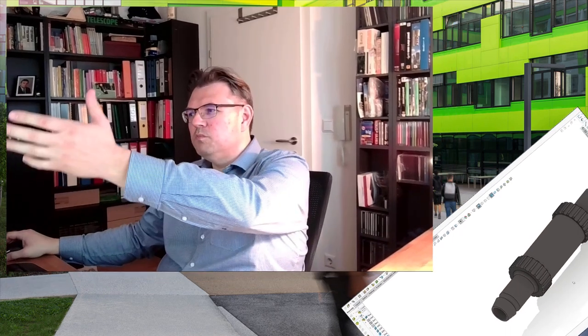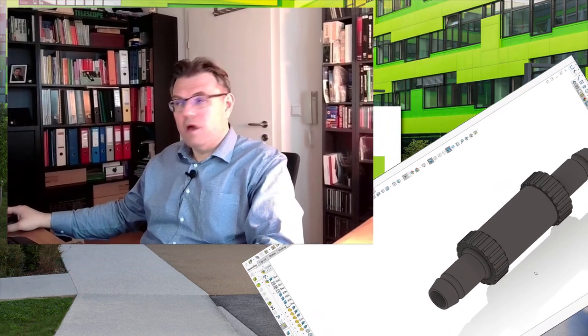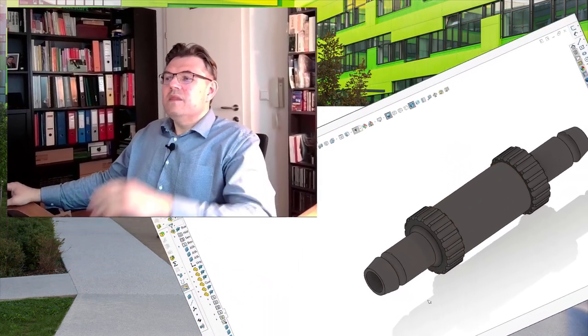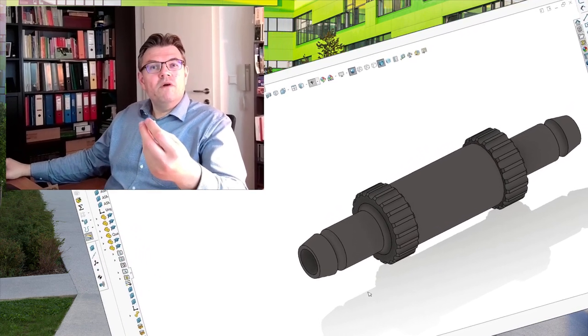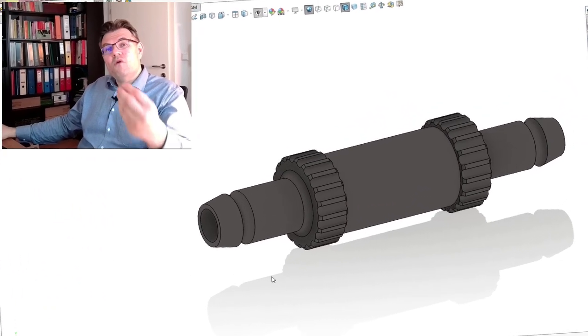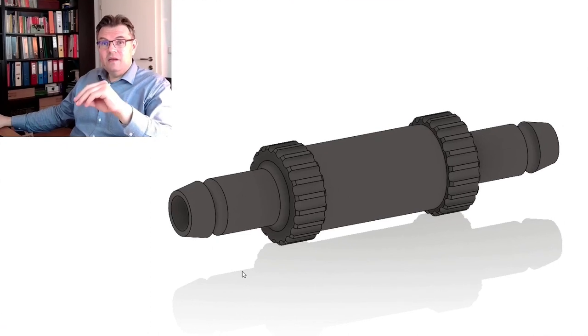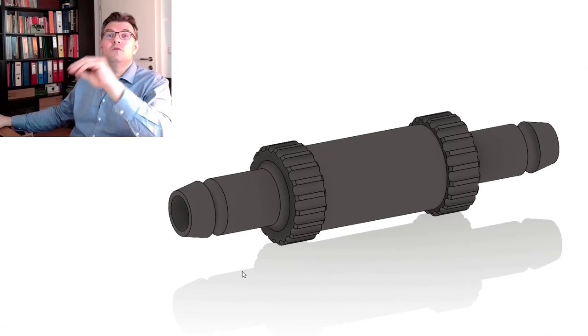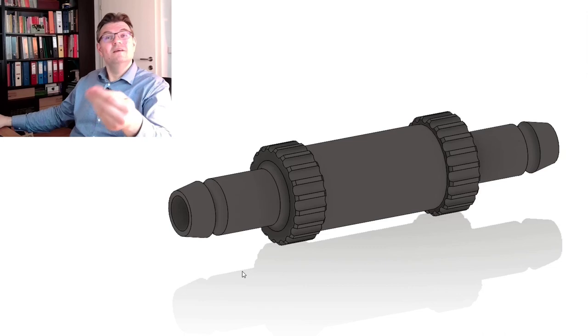I will show you first the check valve or non-return valve. This is a possible way of how it would look like from the outside. The main thing of a non-return valve is that air can travel from one side to the other side, but not from the other side to the one side. So only in one direction.